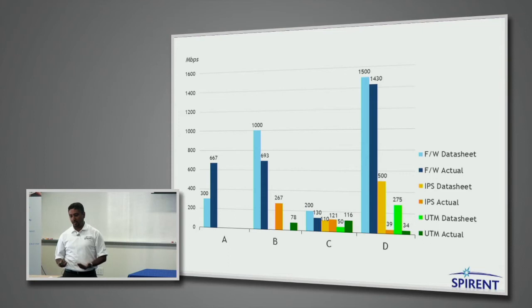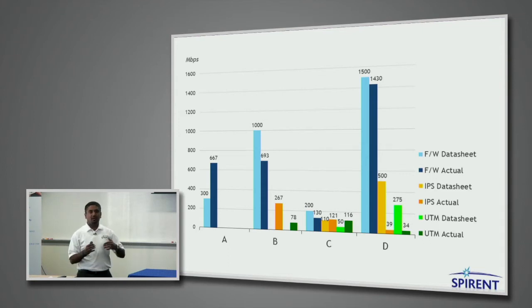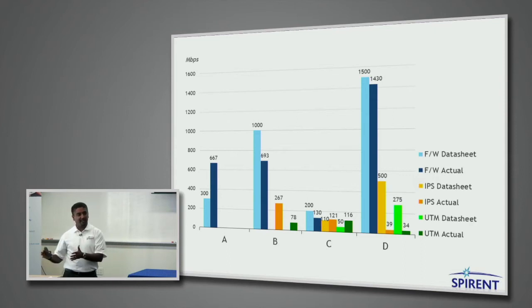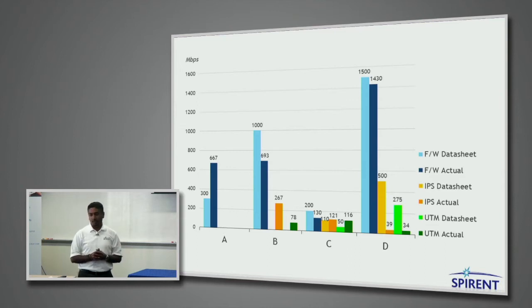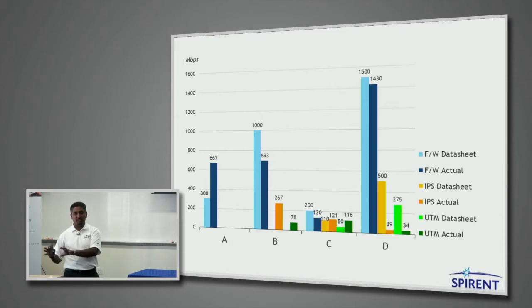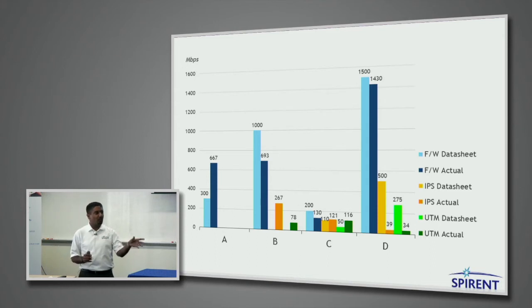Then we went a step further — we enabled UTM functionality, which puts even more pressure on the little device. In this case, if I had gone by just the vendor data sheet claims, I might never have picked C or D. Now after looking at this data, I might say vendor C might be the best choice for my environment. Or if you're not using IPS, you might pick another one; if you're not using UTM, you might pick another one. At this point, you have much more information to make the right decision about what would be best in your production environment.